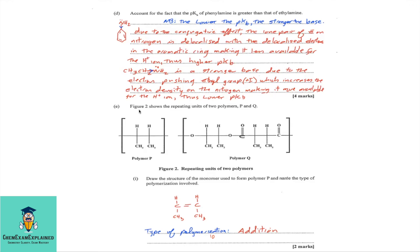Part E. Figure 2 shows the repeating units of two polymers, P and Q. So, if you examine P, you examine Q, you'll notice something right away. Now, polymer P is an addition polymer, while polymer Q is a condensation polymer. So, let's look at the question. Part E.1.